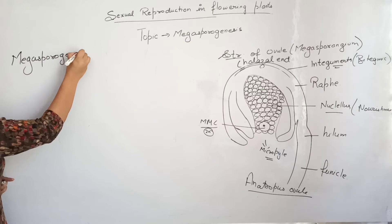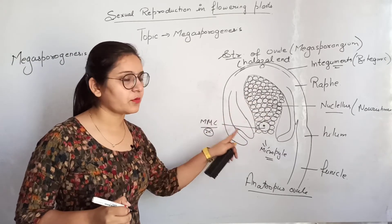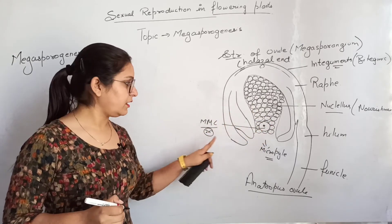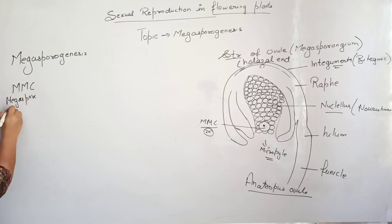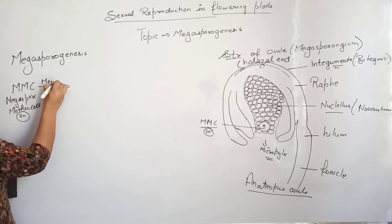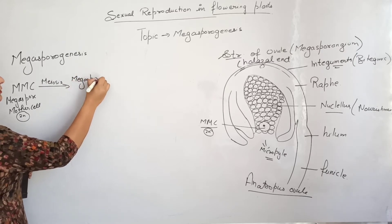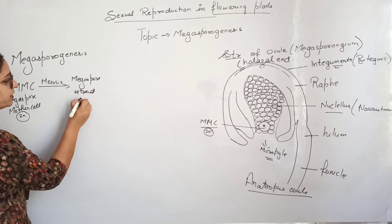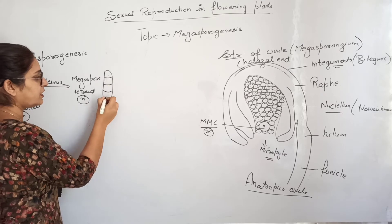Megasporogenesis is the process in which one of the nucellus cells, after getting nourishment, moves toward the micropyle and behaves as the megaspore mother cell. This diploid mother cell undergoes meiosis and forms a megaspore tetrad. The megaspore tetrad consists of four haploid cells, since meiosis is a reductional division.